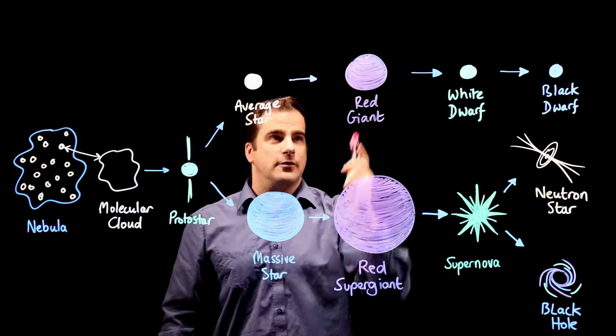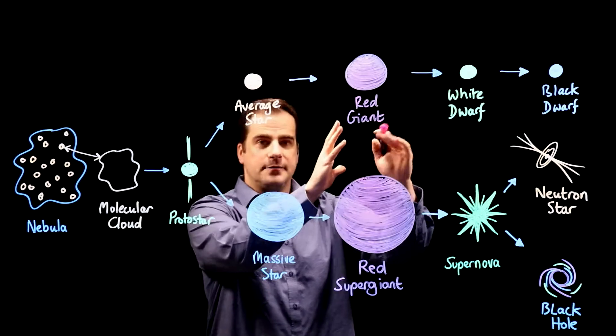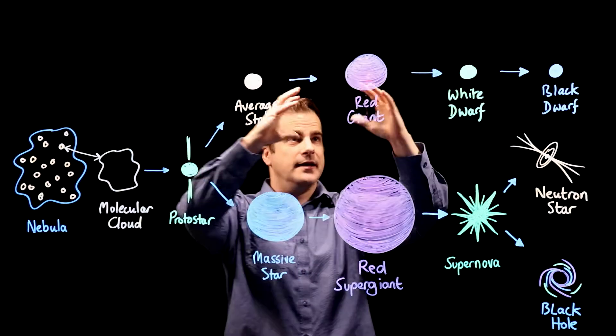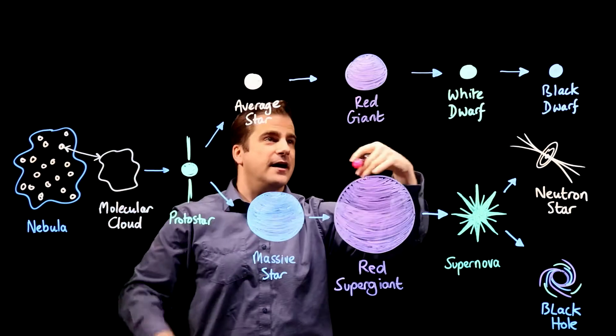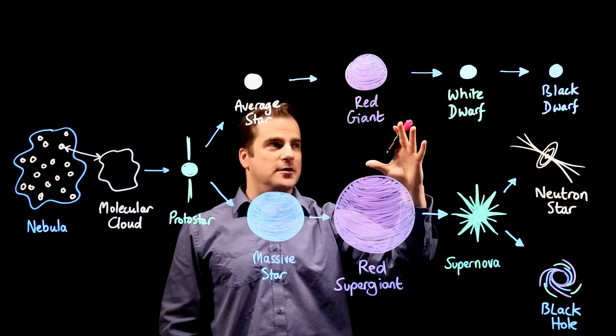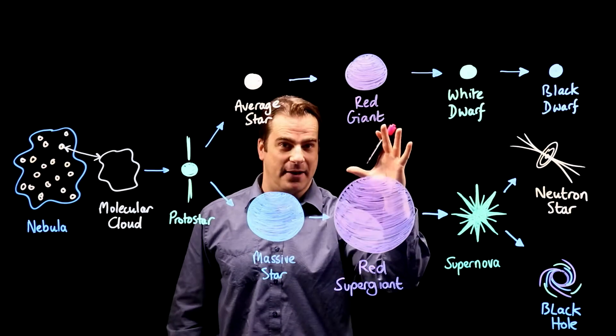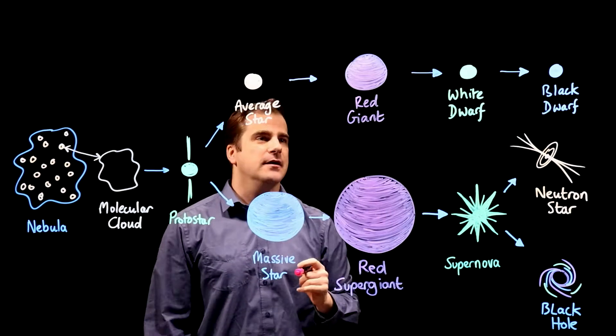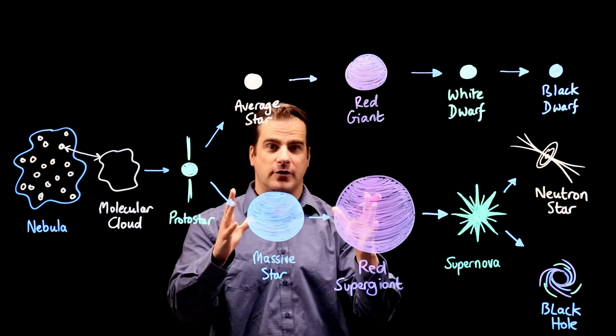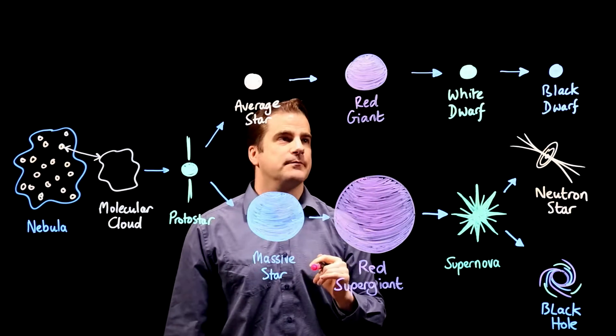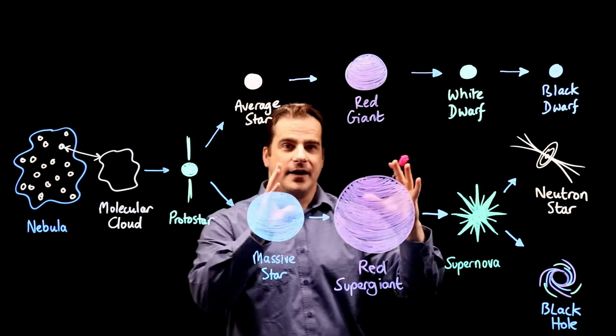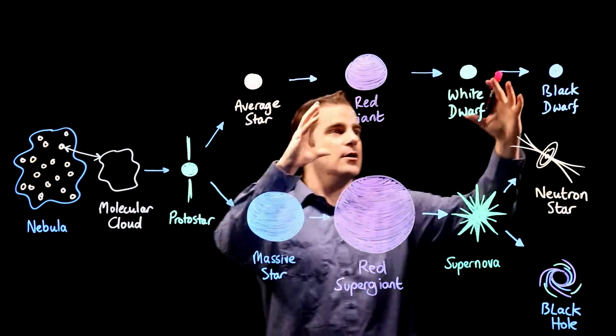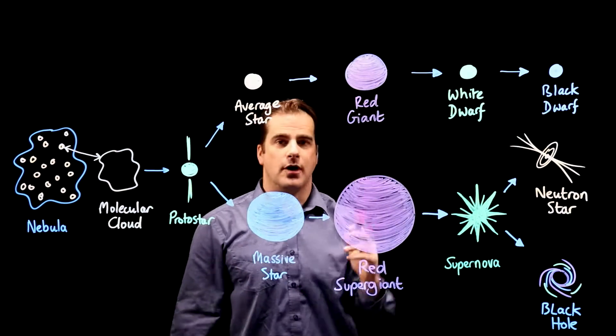Now at this point the red giant loses some of its mass. It drifts off into space and that's called a planetary nebula, not to be confused with a nebula. And these are very beautiful things. Go on the internet and have a look at some pictures. They're very beautiful. And then the red giant having lost some of its mass in the planetary nebula will collapse down into a white dwarf.